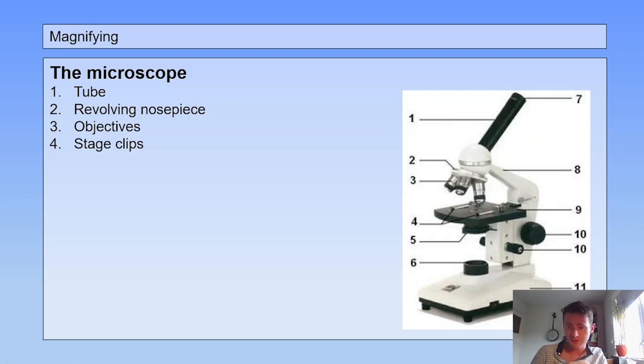Number four, you see them over here, they're the stage clips. Five is the diaphragm or the condenser, and you can control the amount of light coming in. Number six, there's a little lamp inside here, so this is your light source.